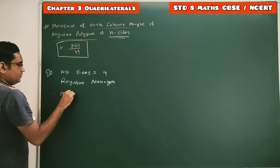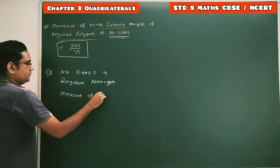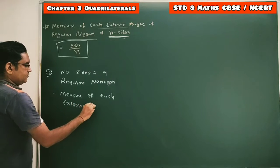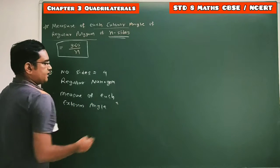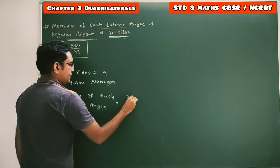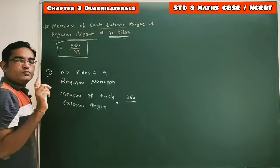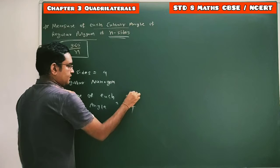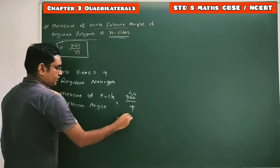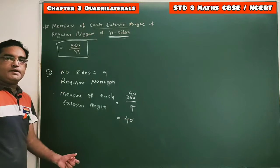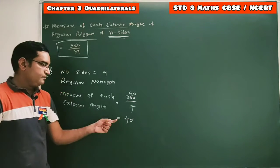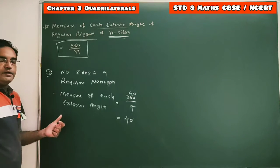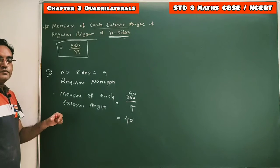Using the formula, the measure of each exterior angle equals 360 divided by n. The total number of sides in a regular nonagon is nine, so we divide 360 by nine, which gives 40 degrees. So there are nine exterior angles and the measure of each exterior angle is 40 degrees.